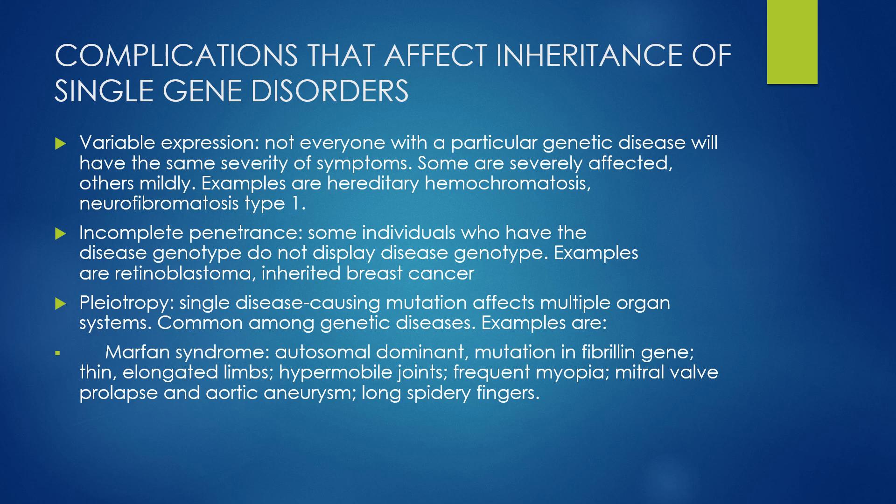Now we are looking at complications that affect the inheritance of single gene disorders. The first is variable expression — for a particular genetic disease, not every person will have the same severity of symptoms; some will be severely affected, others mildly. Examples are hereditary hemochromatosis and neurofibromatosis type 1. The second complication is incomplete penetrance — some individuals who have a particular disease genotype do not display the disease in their phenotype. Examples are retinoblastoma and inherited breast cancer.